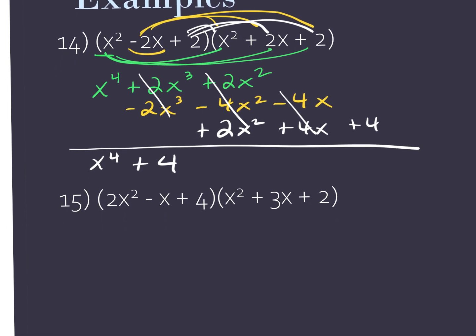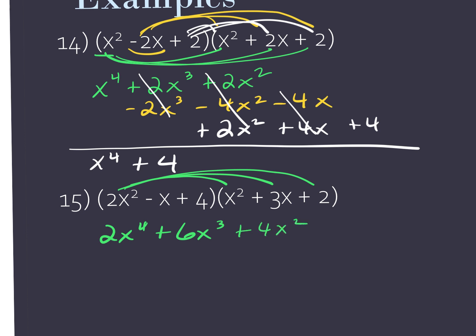All we're doing is distributive property. So I'm going to distribute the 2x squared to the x squared, which gives me 2x to the fourth. 2x squared to the 3x — 6x to the third. 2x squared to the 2 — 4x squared. Now I move to the next term. I'm going to distribute, and I take it as a negative 1x that I'm distributing. So negative 1x to x squared gives me negative x to the third.